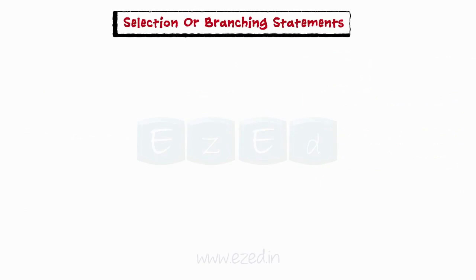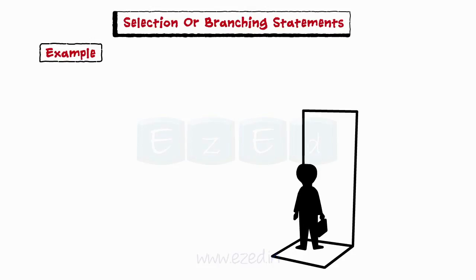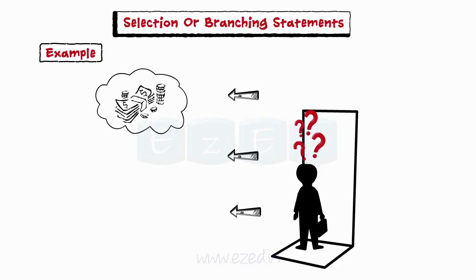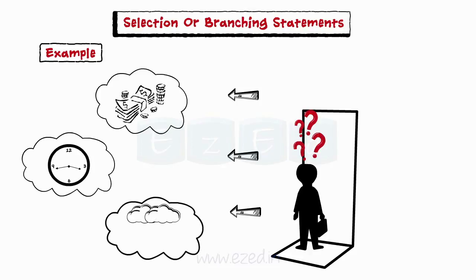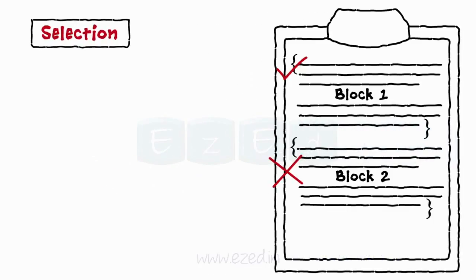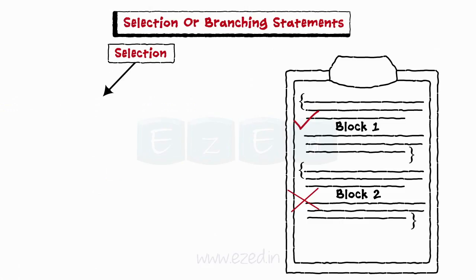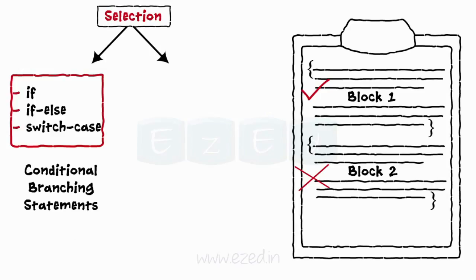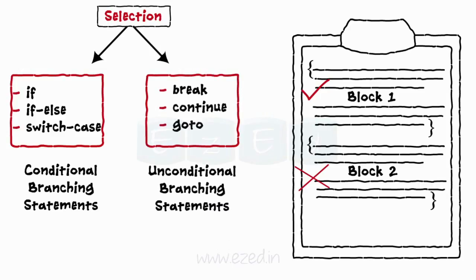Moving on to selection or branching statements — consider a man about to leave for his office. He can walk, take a bus, or go by cab. His decision depends on money, time, and other factors. Similarly in programs, flow is dependent on the desired output. This is termed conditional execution. A conditional execution in which only one group of statements is selected over others is known as selection, made using if, if-else, else-if ladder, and switch case. These are called conditional branching statements. Break, continue, and goto are unconditional branching statements.